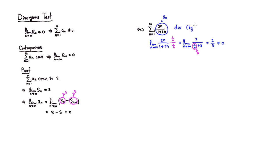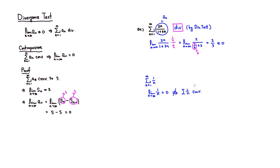That's how you apply the divergence test to see if a given series is divergent. But the limit of a_n equaling 0 does not guarantee convergence. Here's an example: if you look at the harmonic series, which is known to be divergent, the limit of 1/n as n approaches infinity is actually equal to 0 — that's 1 over infinity. But this does not mean the series is convergent, because that is not true.